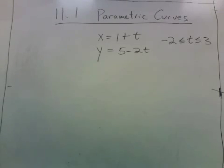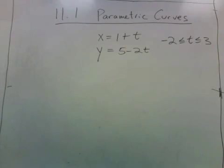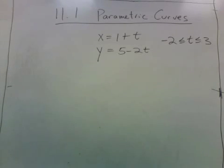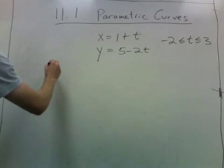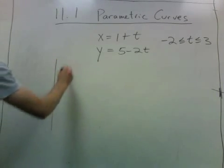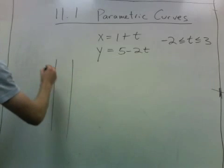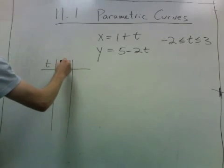Here's a simple example of a parametric curve. x is given as 1 plus t and y is 5 minus 2t, and t is allowed to go from negative 2 to 3. So let's try to plot this. The easiest way to approach plotting is to first write down a table of values.